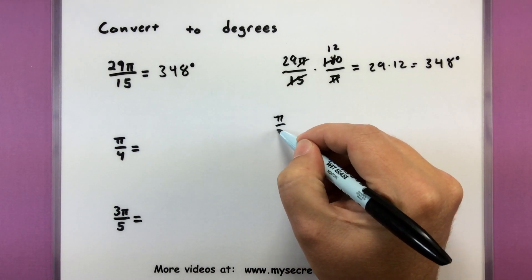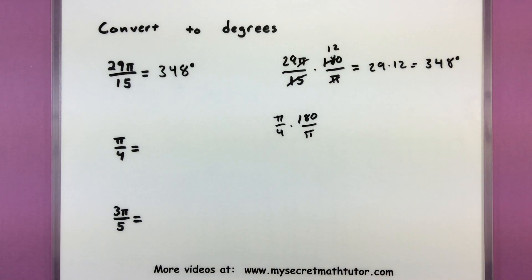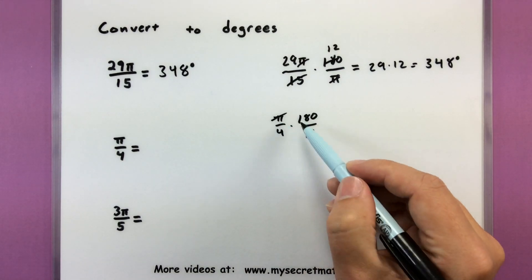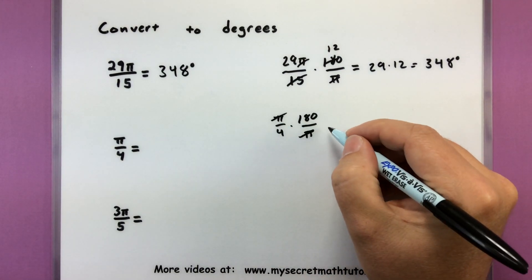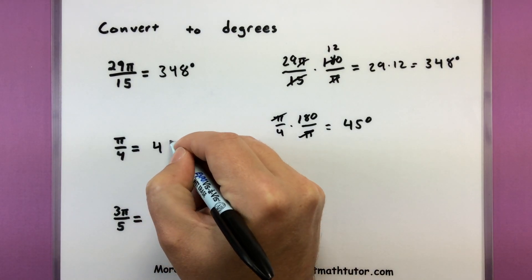Here's a nice one, pi over 4, multiplied by 180 over pi. So I'm making sure that pi is on the bottom, so those guys cancel. 4 goes into 180 45 times. So 45 degrees.